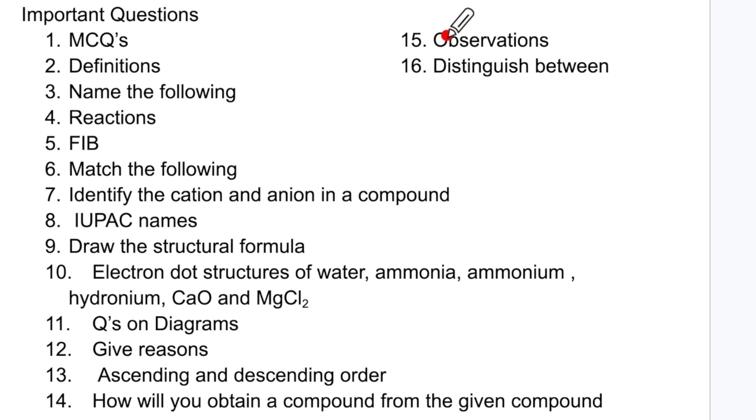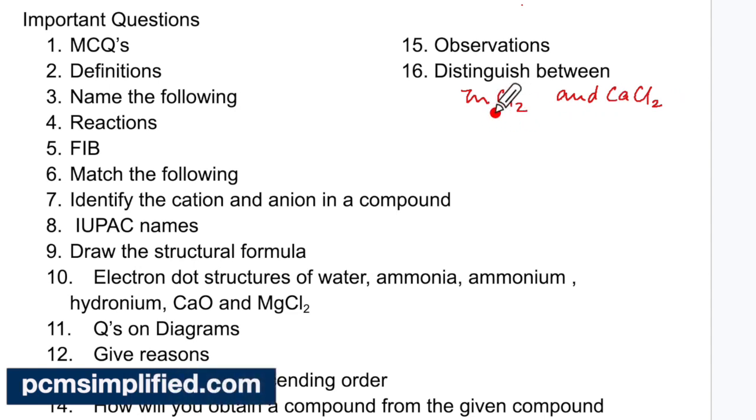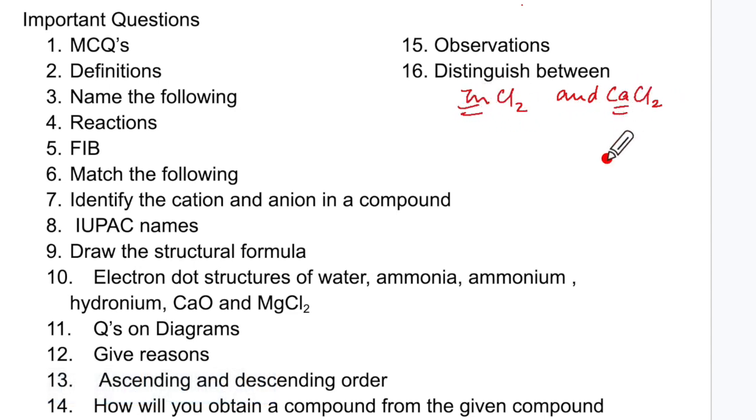So I have added the observations which I have forgotten to add there and also the 16th one is distinguish between. Now distinguish between will be like you will have ZnCl2 solution or ZnSO4 solution. Now here you will see that chloride and sulfate radicals are here. So what will be the reagent that you will use? That you will find in practical chemistry, revise that well. Also in distinguish between this question if you are given like ZnCl2 and CaCl2. Now both of these are soluble solids. What is different? The cation Zn and Ca, they are different.